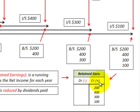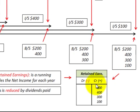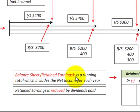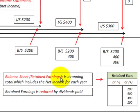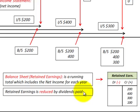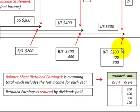There's the flow into retained earnings. Retained earnings is a balance sheet account — it's a running total of what the net income for the years were. But you have to remember retained earnings is also reduced by the dividends that were paid out.